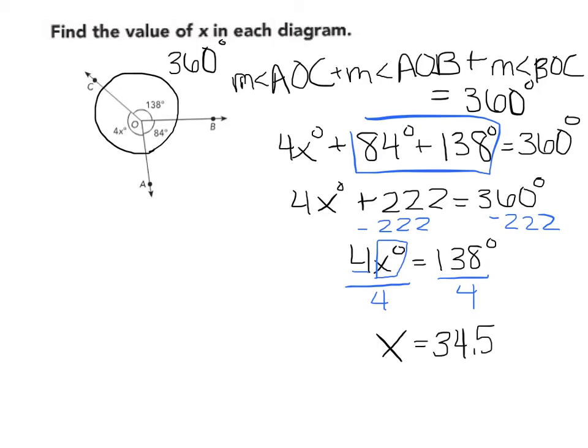You can then check to make sure that your work is right. So this would be my check over here. Let's check and see if 4 times 34.5 plus 84 plus 138 gives me 360.